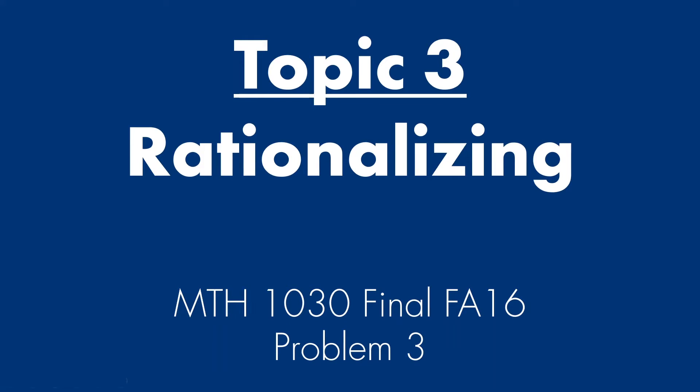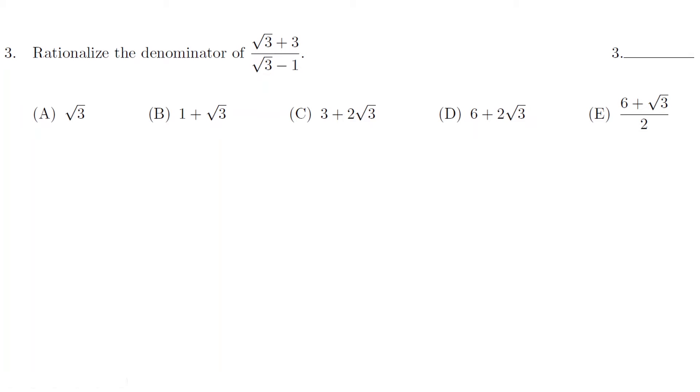Next topic is rationalizing. The problem is taken from final FA 16 problem 3. So here we need to rationalize the denominator, obviously. How to rationalize denominators? Always multiply by the conjugate. What the hell is the conjugate? a plus b, the conjugate of that is a minus b. a minus b, the conjugate of that is a plus b. Very simple. So if you have 3, root 3 minus 1, the conjugate is going to be square root of 3 plus 1, square root of 3 plus 1.